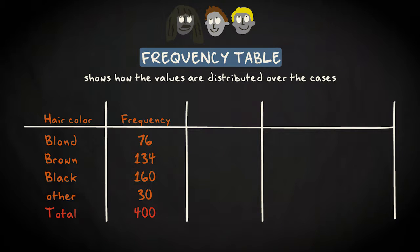We can distinguish four categories: blonde, brown, black, and other. This is the frequency table. You can see that 76 football players have blonde hair, and 160 players have black hair. Note that these values add up to 400. We don't have any missing data for hair color.